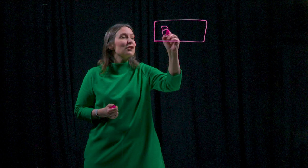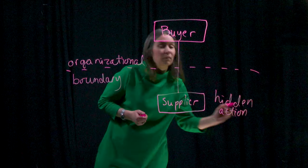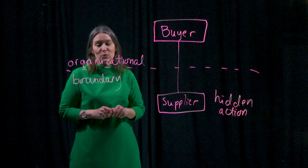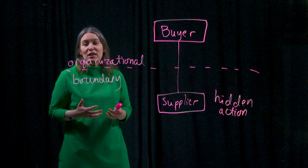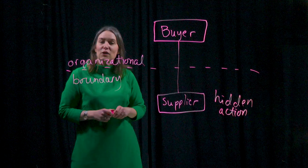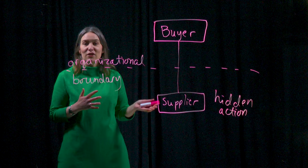Drawing from agency theory, we have a principal and agent — a buyer and a supplier. Agency theory assumes that because there is an organizational boundary, the buyer, meaning the principal, suffers from information asymmetry and that the parties have misaligned goals. The supplier, because of this information asymmetry, has the opportunity to act in their own best interest rather than the buyer's, engaging in hidden action — for example, not using full effort or using substandard materials. So agency theory says that if a supply failure occurs, the cause is hidden action by the supplier.